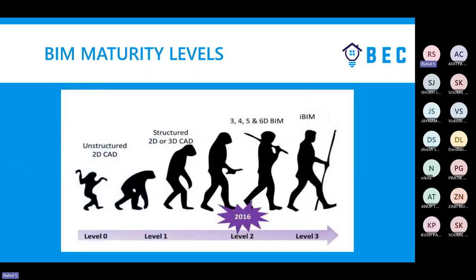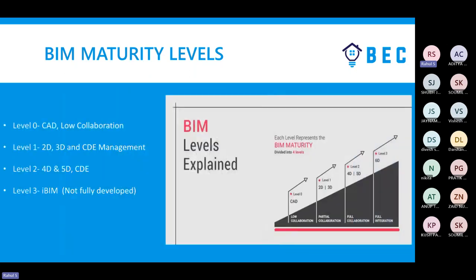In terms of collaboration: in a CAD environment at Level 0, there is no collaboration — one person works individually and hands off the work directly to the next person. But at Level 2, working in 3D, 4D, or 5D, it becomes full collaboration. All data is linked to a cloud model, and all project participants are connected to it, so changes are immediately reflected without needing to send files to individuals.